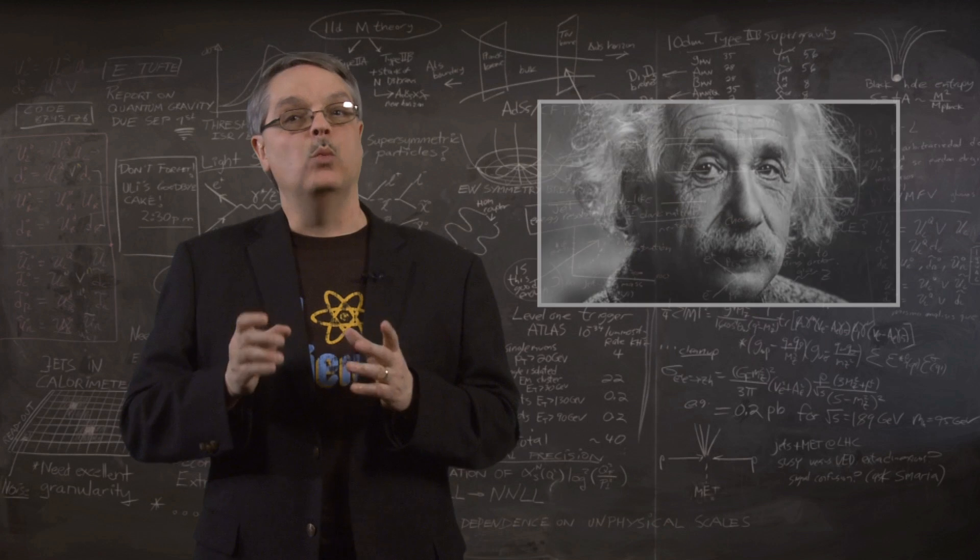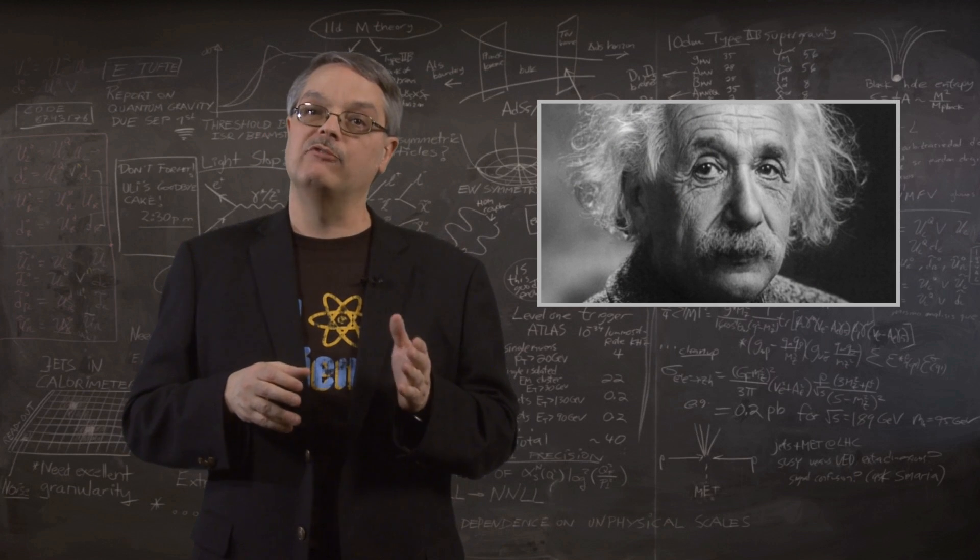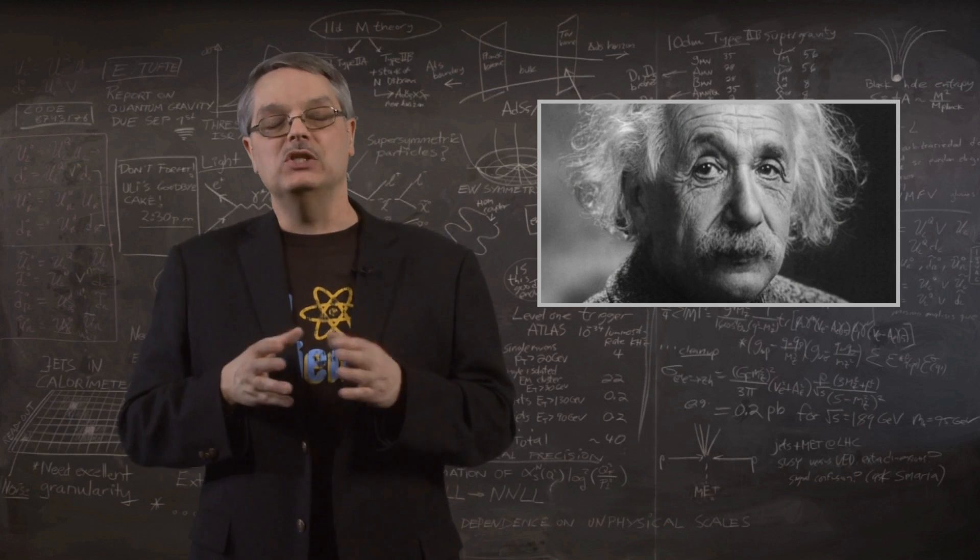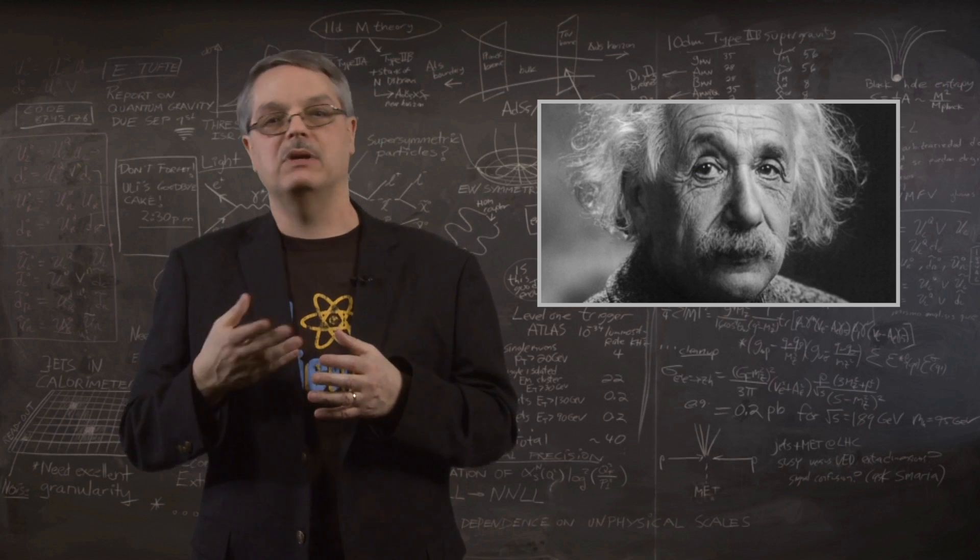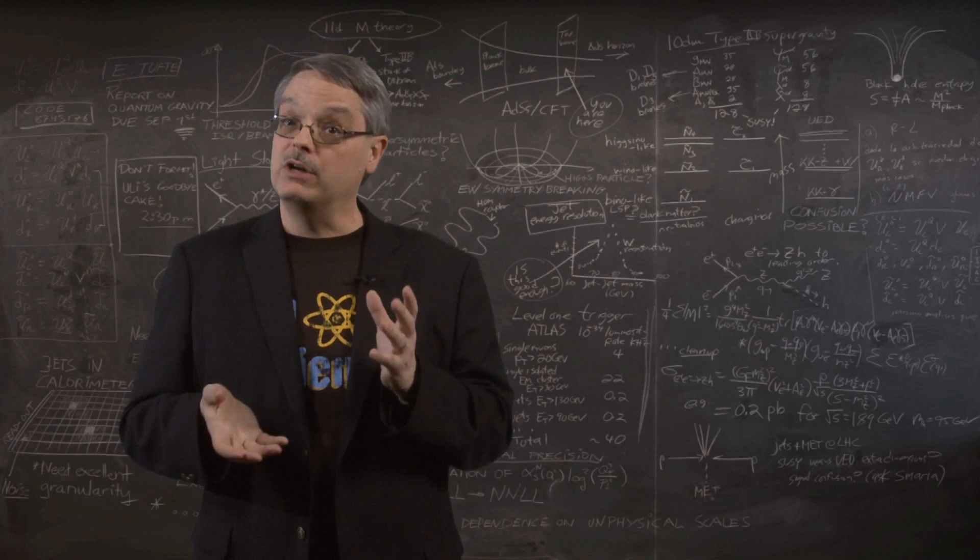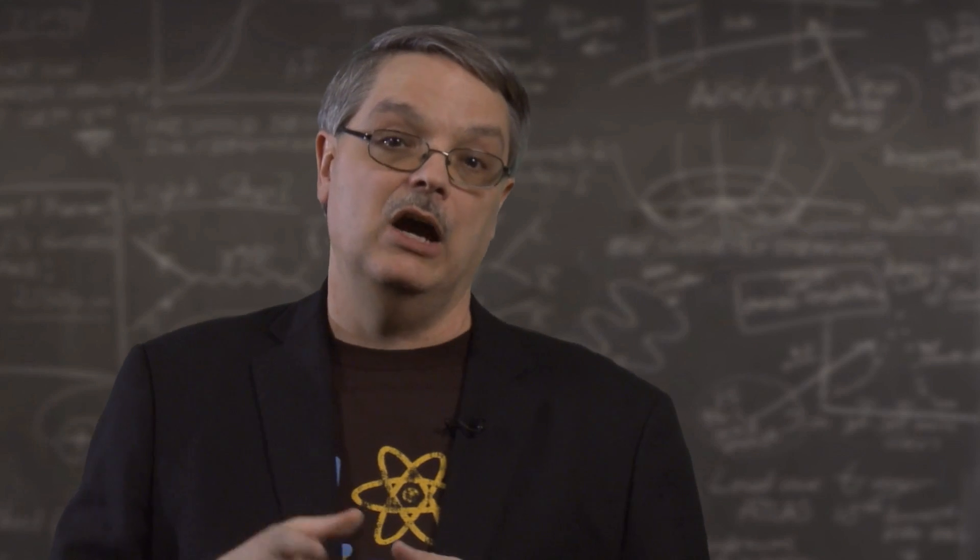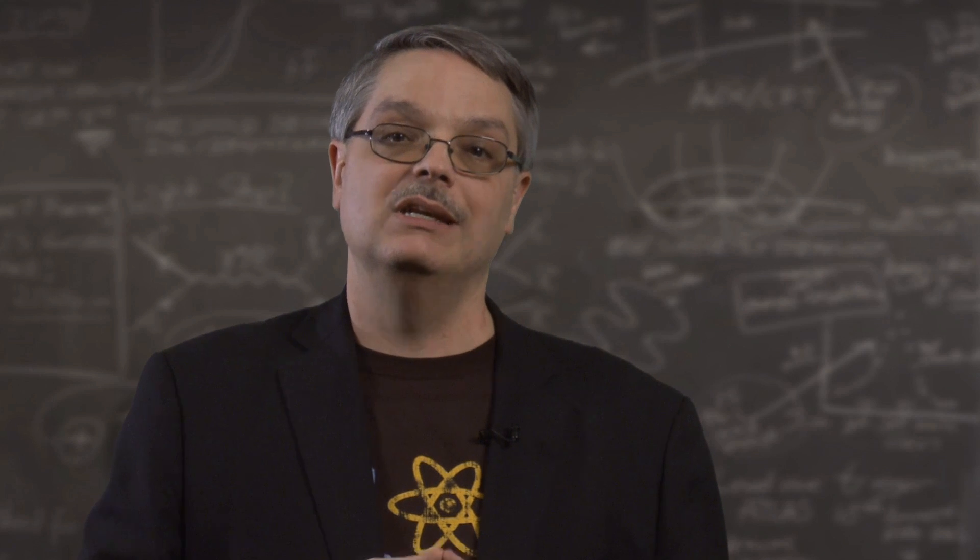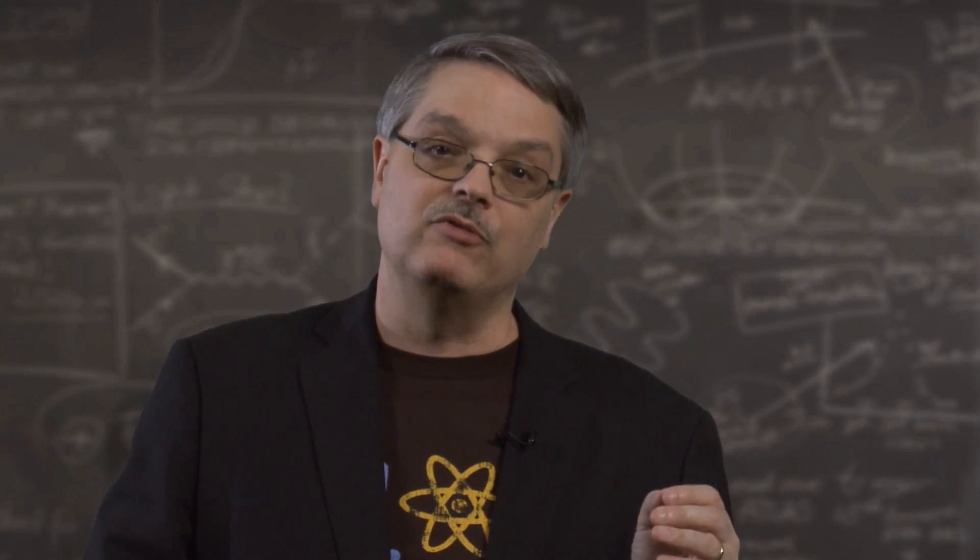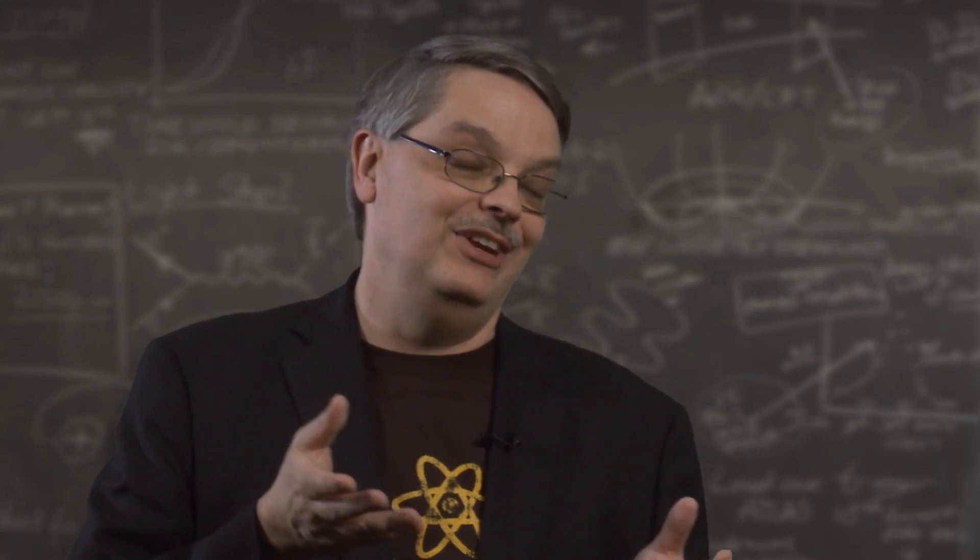It turns out that Einstein once postulated a repulsive form of gravity in his equations. This was because he knew that ordinary matter should make the universe contract and he needed some kind of repulsive gravity to overcome the attraction. However, when the universe was found to be expanding in the 1920s, Einstein took that extra form of gravity out of his equations. He even called it his biggest blunder. Imagine if he hadn't done that. I mean, the dude could have been famous.